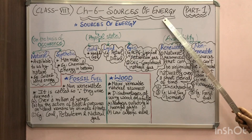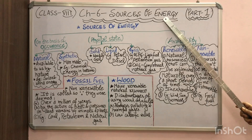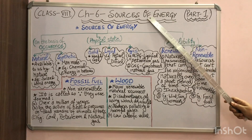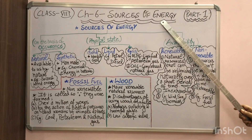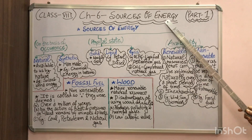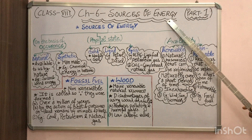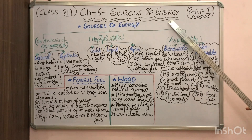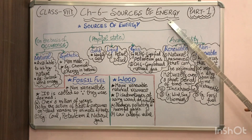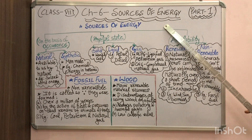Students, you have done energy in your 7th standard. What is energy? It is the capability of doing work. Now, to obtain energy we require food. Food breaks down to give energy to us, but in this chapter we will not talk about that form of energy. Rather we will talk about mechanical energy, chemical energy, and heat energy, which we generally use in the form of fuels.